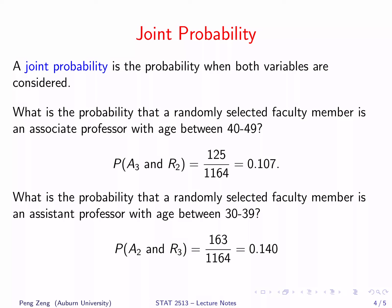The second example: what is the probability that a randomly selected faculty member is an assistant professor with age between 30 to 39? This event corresponds to A2 and R3. Check the contingency table in the previous slide. We will find that 163 faculty members are assistant professors in their 30s. So, the joint probability is 163 over 1164, which is 0.140.